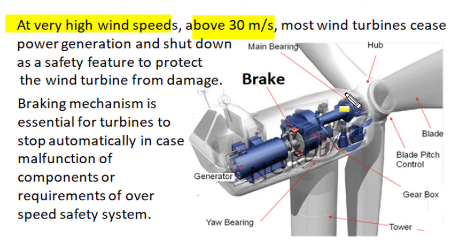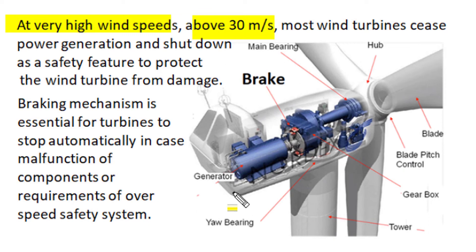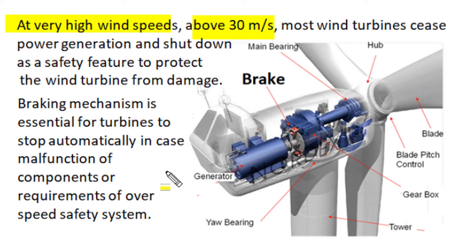At very high speeds above 30 meters per second, most wind turbines cease their power generation and shut down as a safety feature to protect from damage. The blade pitch control changes the orientation of the blades, the yaw mechanism changes the orientation of the nacelle bed, and the backup mechanical braking mechanism stops the turbine generator. This action is performed whenever there is very high wind speed or an electrical fault in grid connectivity.